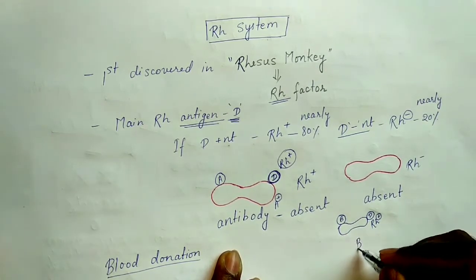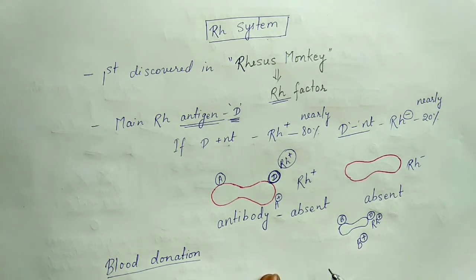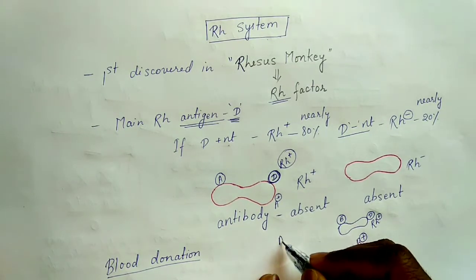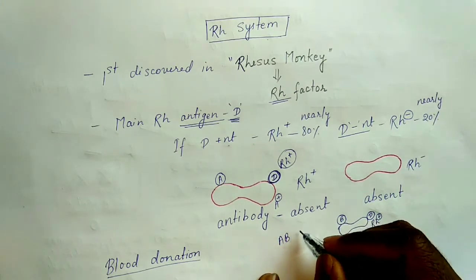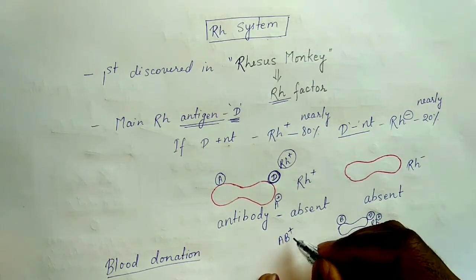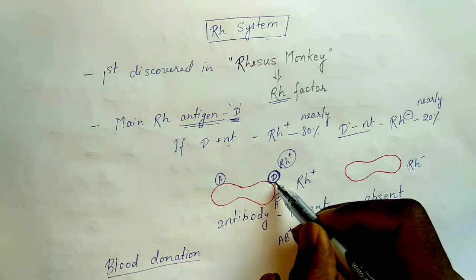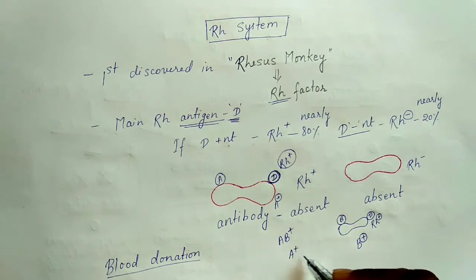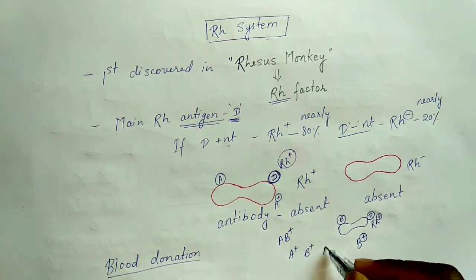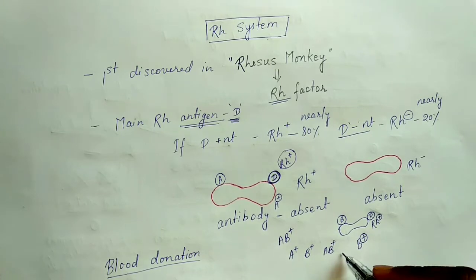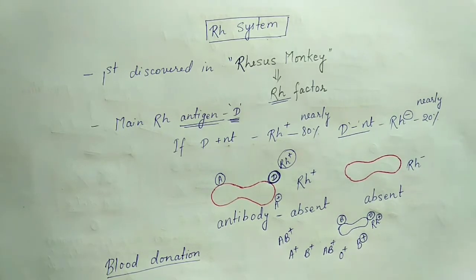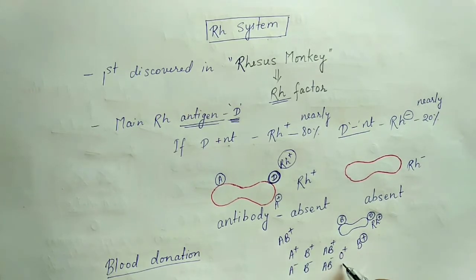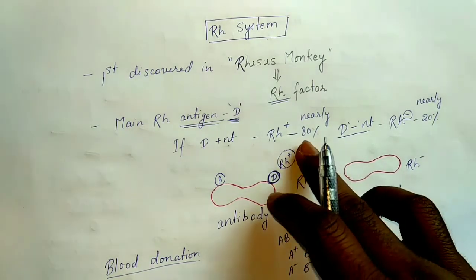If a person has B antigen and also has D antigen, they are B positive. If someone has AB antigen and D is also present, they are AB positive. If D is absent, it will be negative. So the blood groups will be A positive, B positive, AB positive, O positive, or if Rh is absent: A negative, B negative, AB negative, O negative.